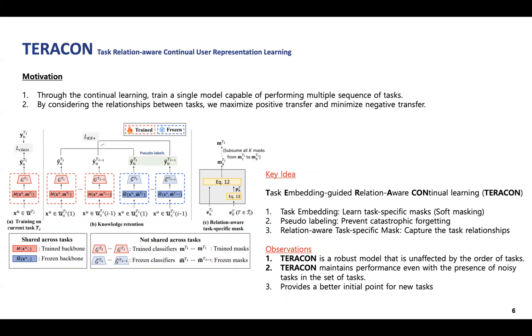The key ideas are task embedding, pseudo-labeling, and relation-aware task masks, which prevent catastrophic forgetting and facilitate positive transfer across tasks.